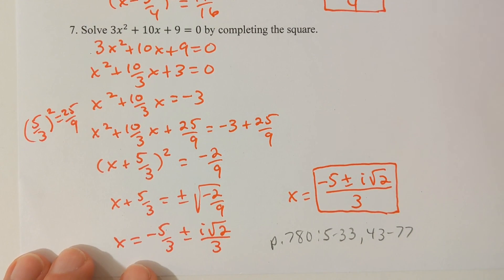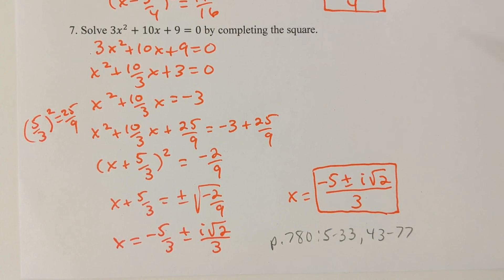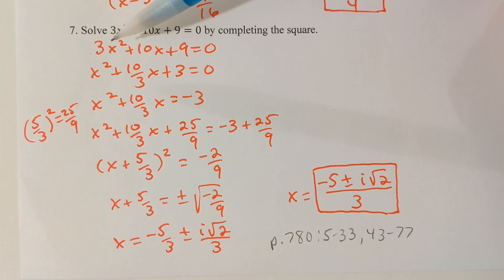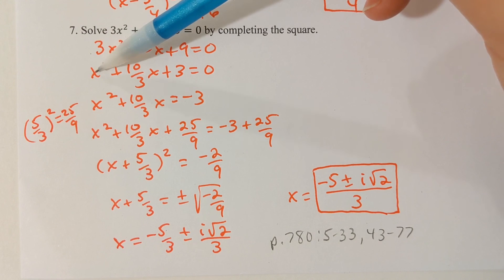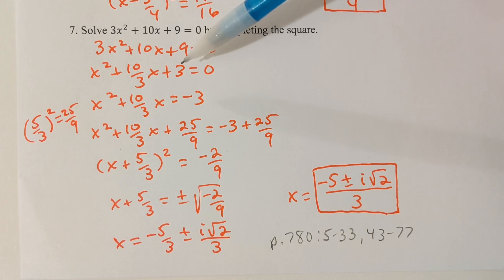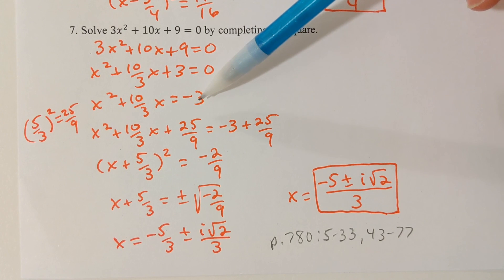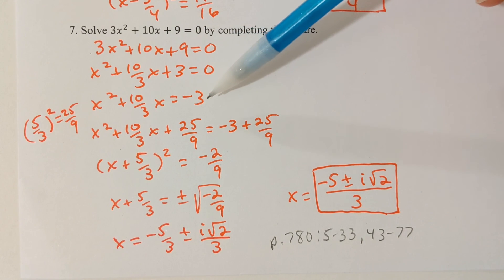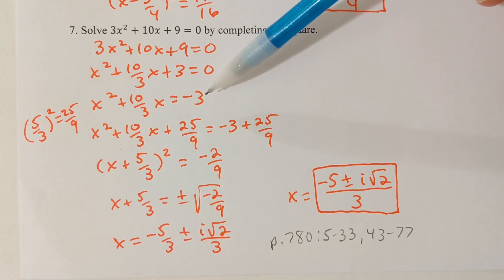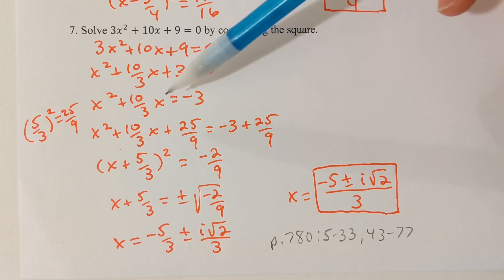We'll take a look at one more — problem 7, solve by completing the square. Of course the first thing is to divide by 3 to get a 1 in front of the x² term, and then bring the constant over to the right. Now I'm ready to take half of the number in front of x.